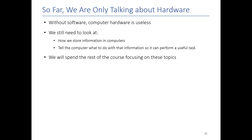It's important to remember that so far we've only been talking about hardware, but software is another major part of computers. Without software, the computer is essentially just a pile of electronics. We need to look at how we tell computers to store information and, more importantly, how to manipulate that information so it can do useful things — like how do we build a word processor, a video player, a video game? We're going to be spending the rest of the course focusing on these topics, and in just a few lessons you'll have an opportunity to learn how to code the computer to make it do anything you want.